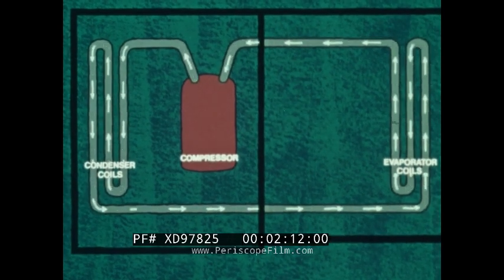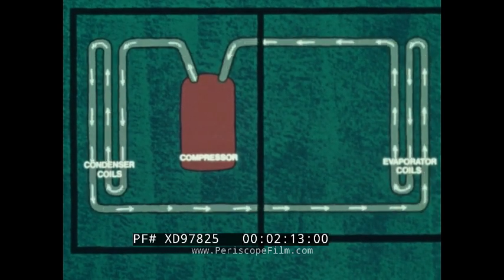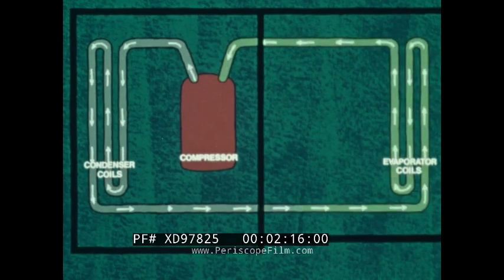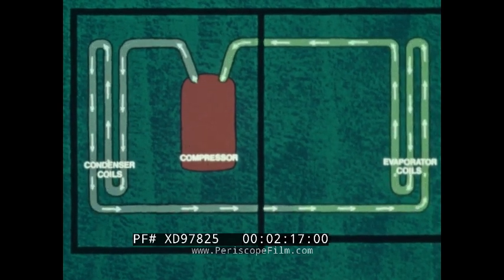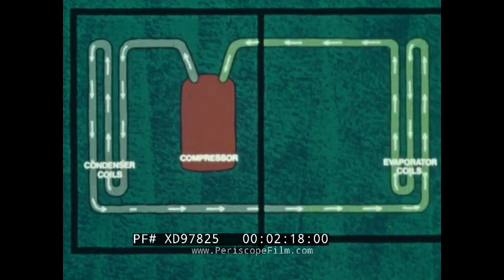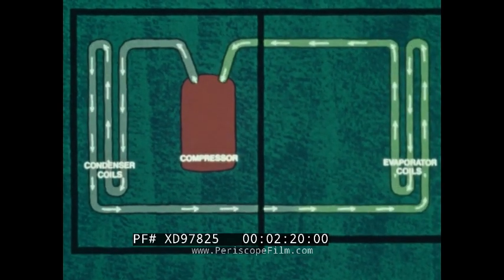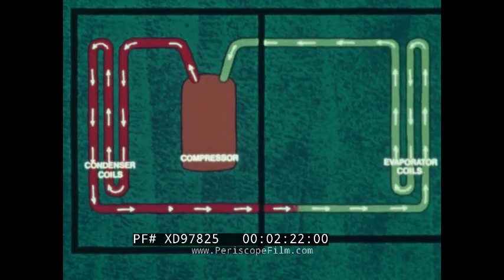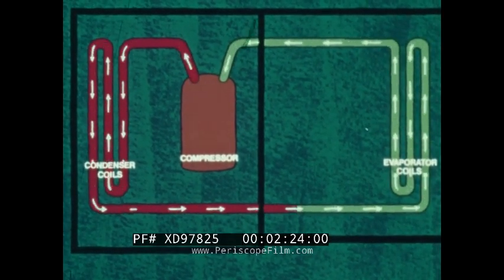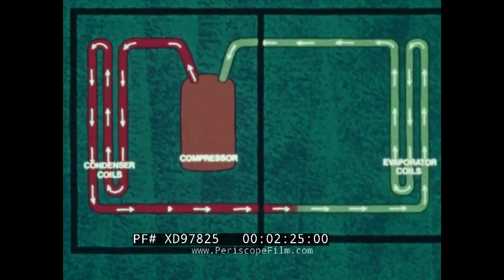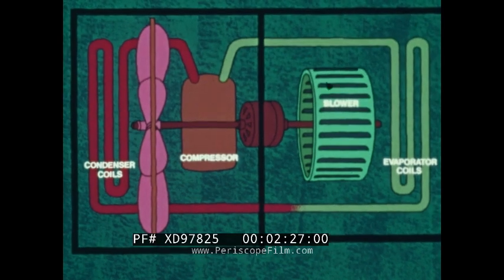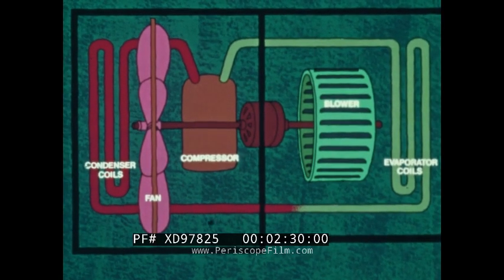A compressor circulates refrigerant through the system, running cold in the evaporator to draw heat from the room, then compressed to a high temperature to run hot through the condenser, expelling heat to the outside air. A blower on the room side and a fan on the outside move the air across the coils.